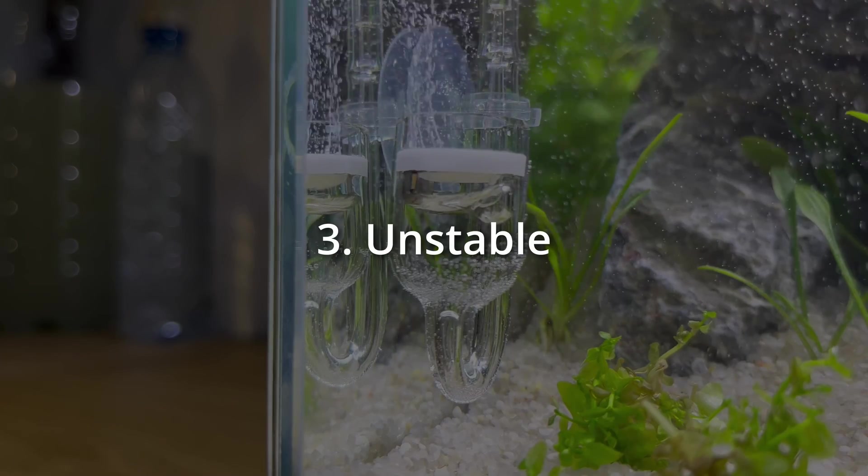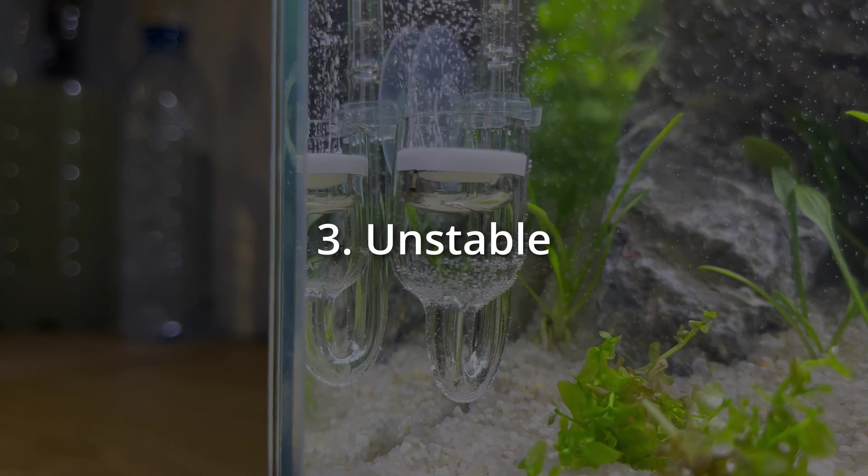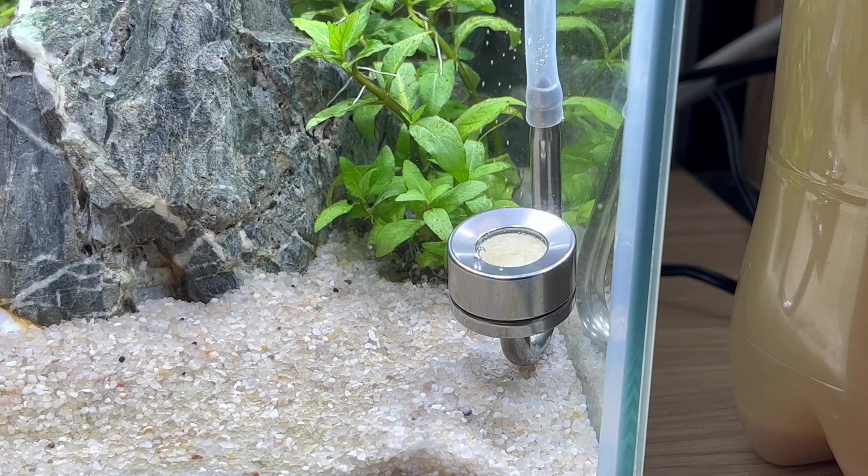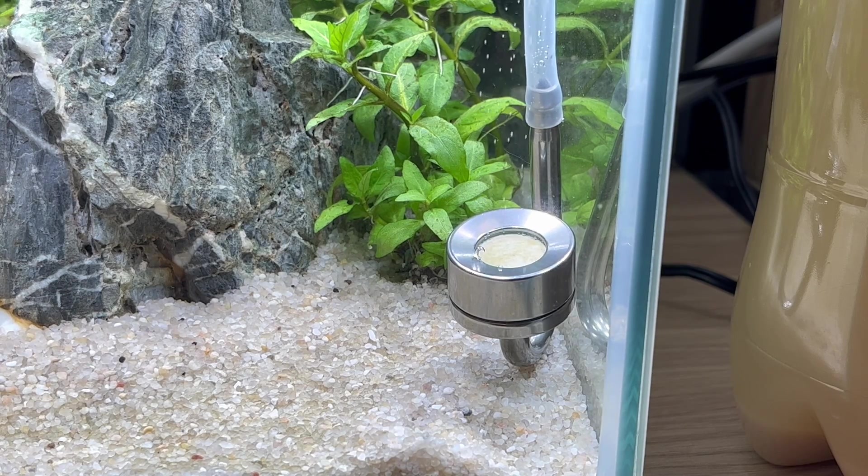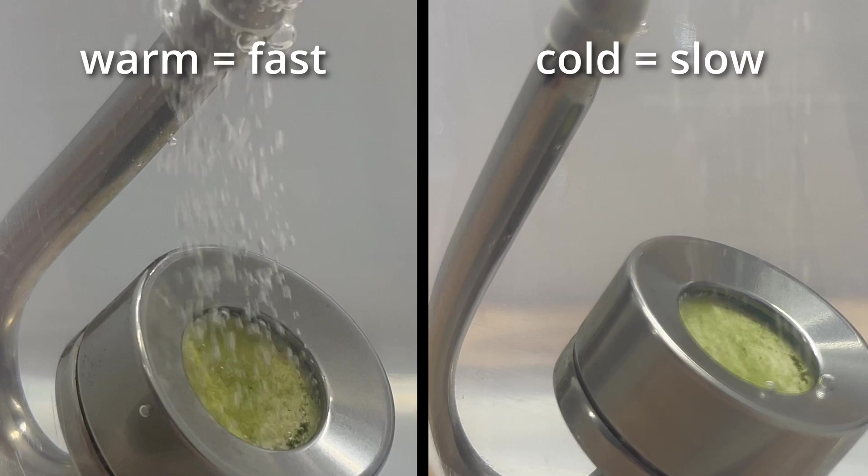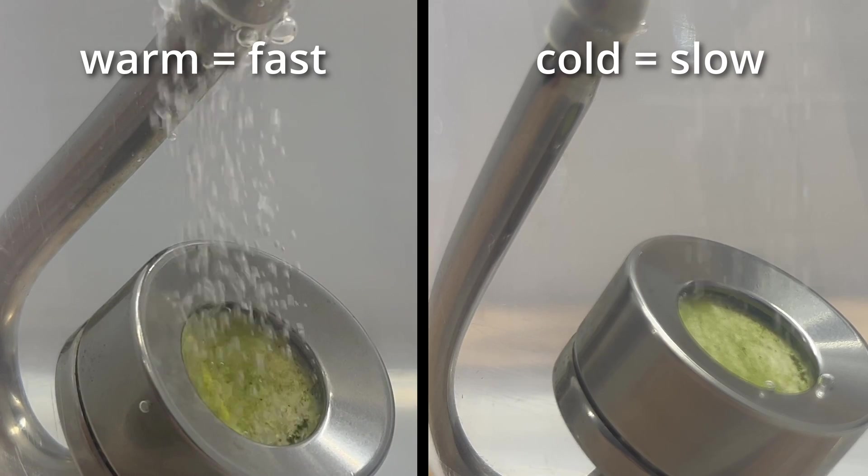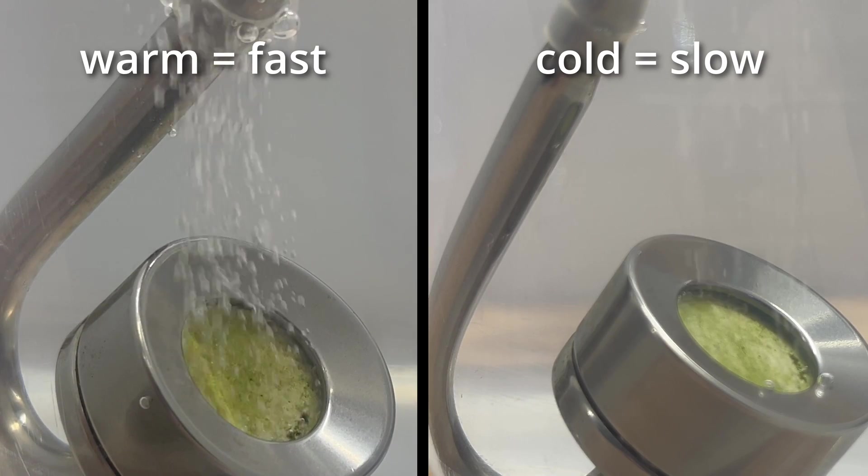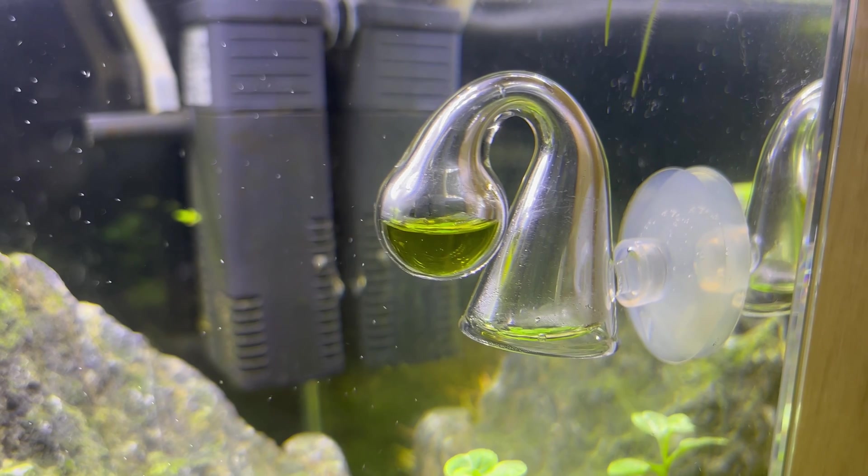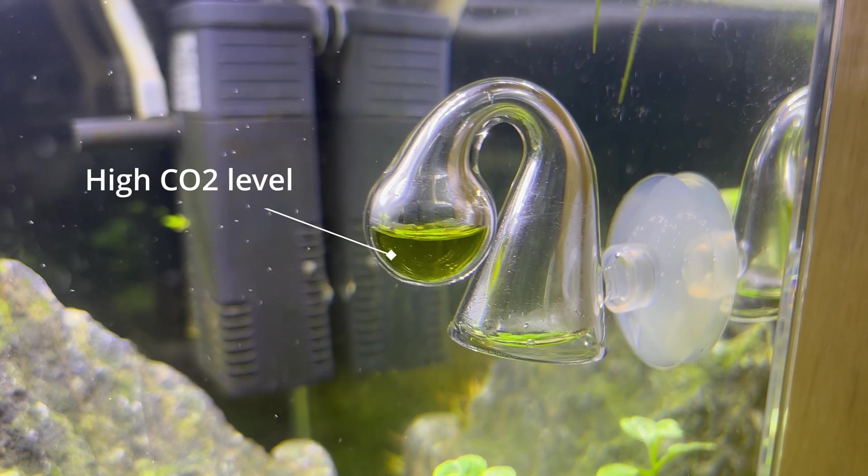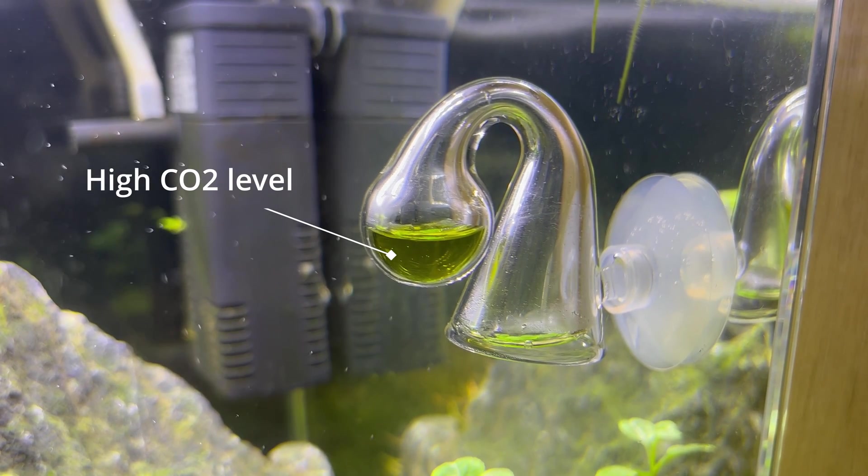And lastly, this system is not very stable. Yeast activity is highly dependent on the temperature. It produces CO2 much faster when it's warm and slows down once the temperature drops. This might lead to some pH and CO2 fluctuations in your tank.